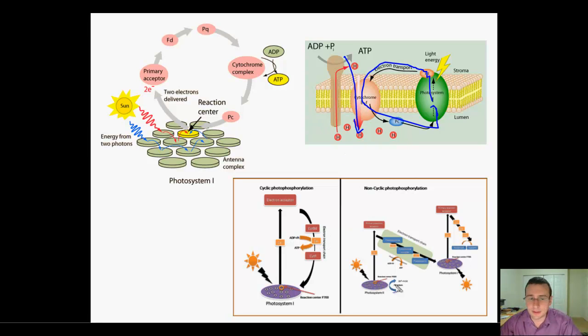Look at the difference here. Instead of the electrons jumping out, down, up, down, and ending up in NADPH, and meanwhile ATP is being made through pumping, this time ATP is still made through pumping, but the electrons go back where they started into photosystem 1.